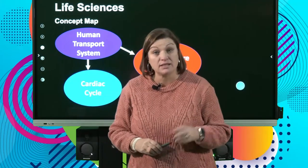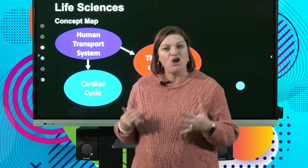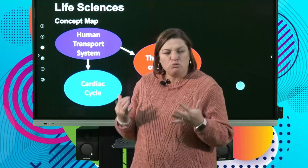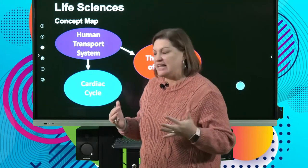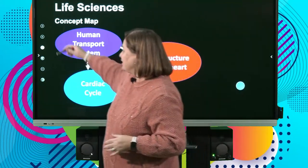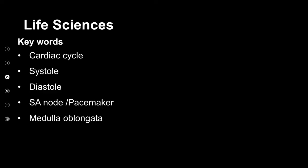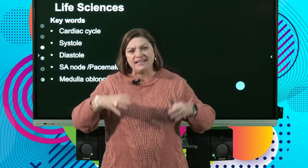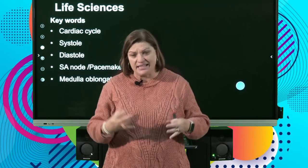A cycle is a pattern that's constant and always the same. If it isn't the same, that could mean there is a slight problem. So let's have a look at what we mean by the cardiac cycle. There are quite a few words you really need to know. The first is systole, which means contraction, and another is diastole, which means to relax.